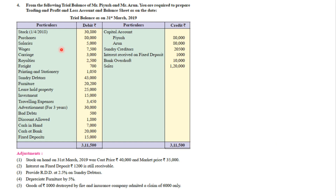Let's discuss the trial balance first. The very first item is stock — this is opening stock, so it will be transferred to trading account debit side. Purchase is trading debit. Salaries: profit and loss debit. Wages: trading debit. Carriage: trading debit. Royalties: trading debit. Freight: trading debit. Printing and stationery: profit and loss debit.